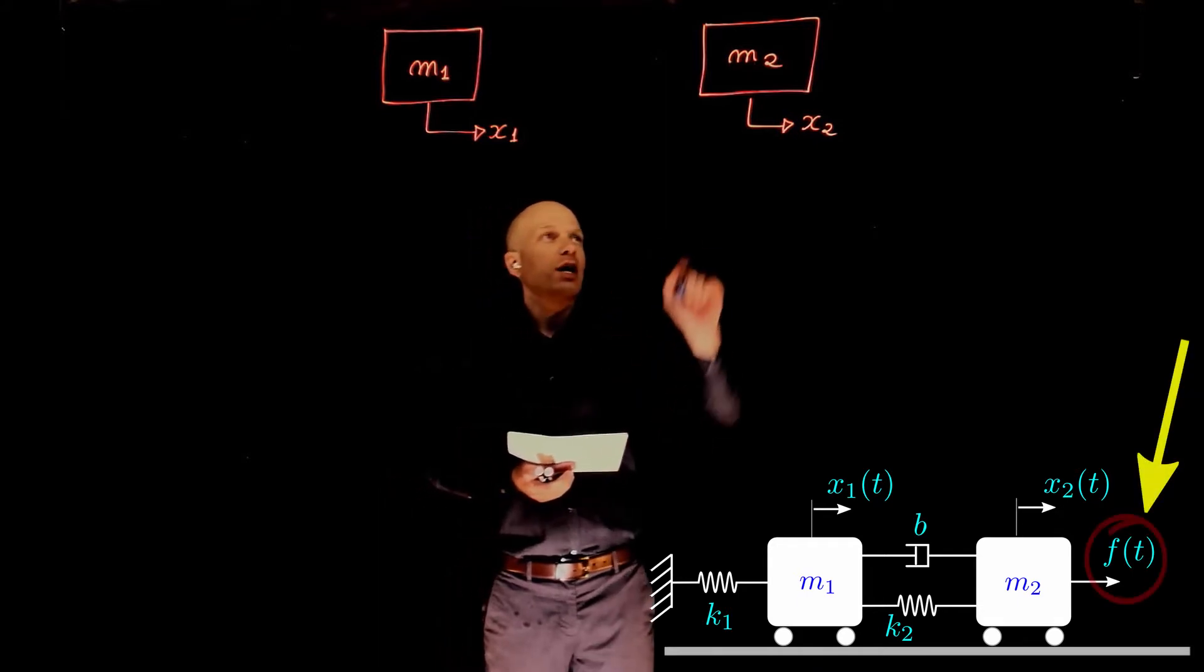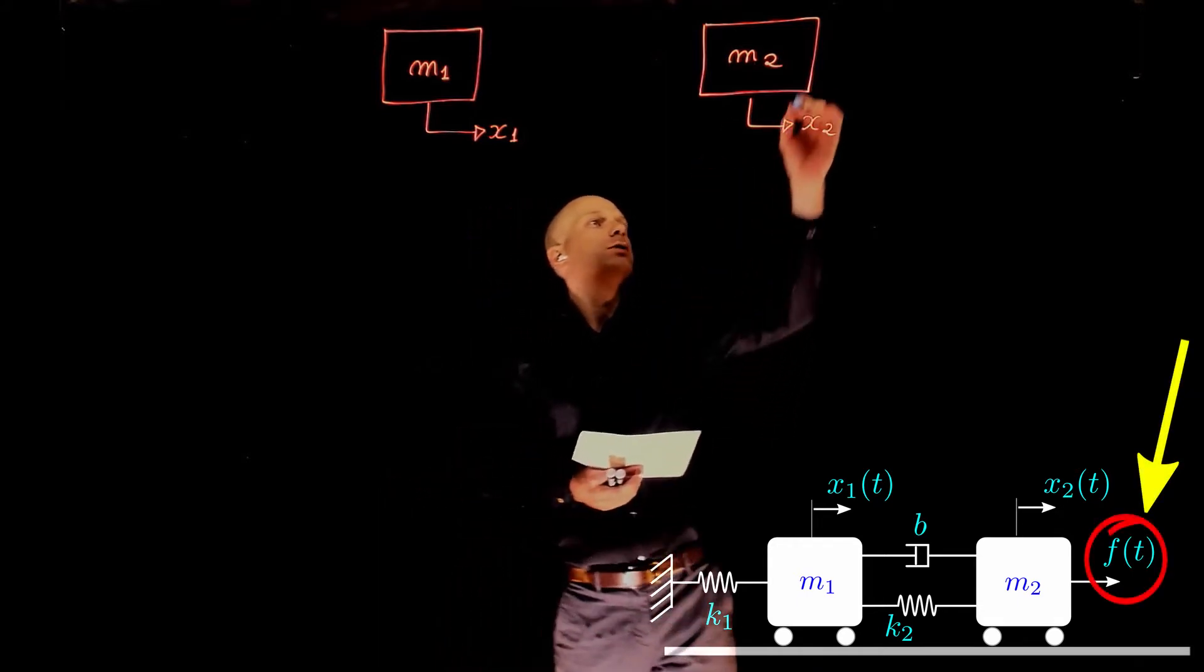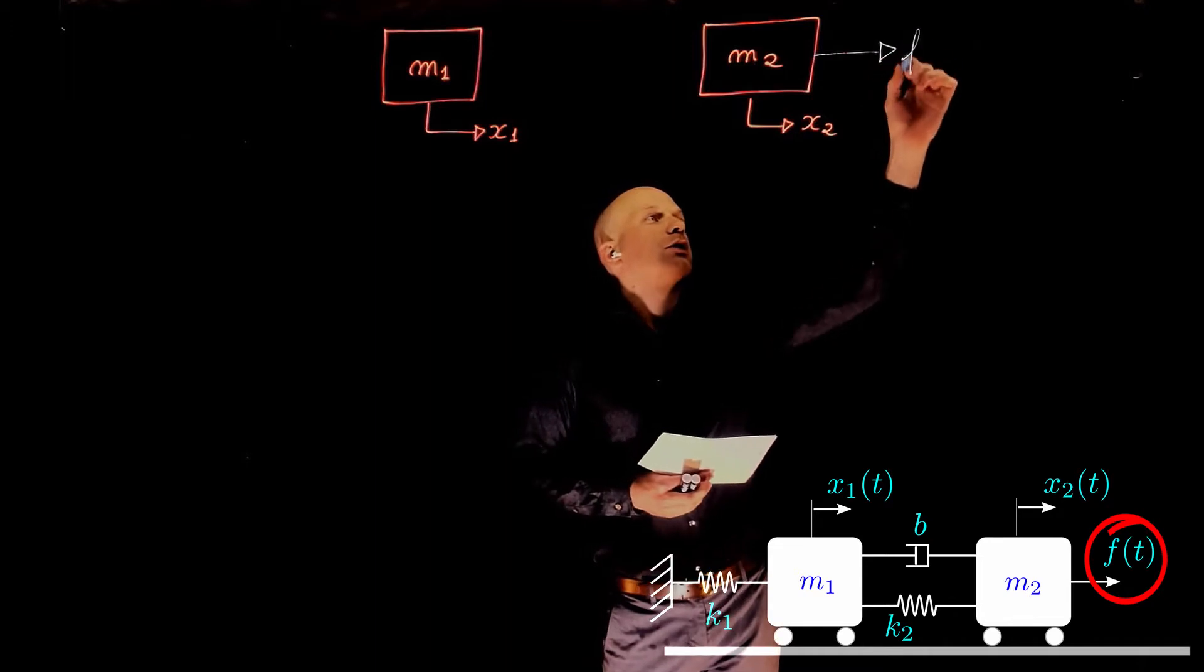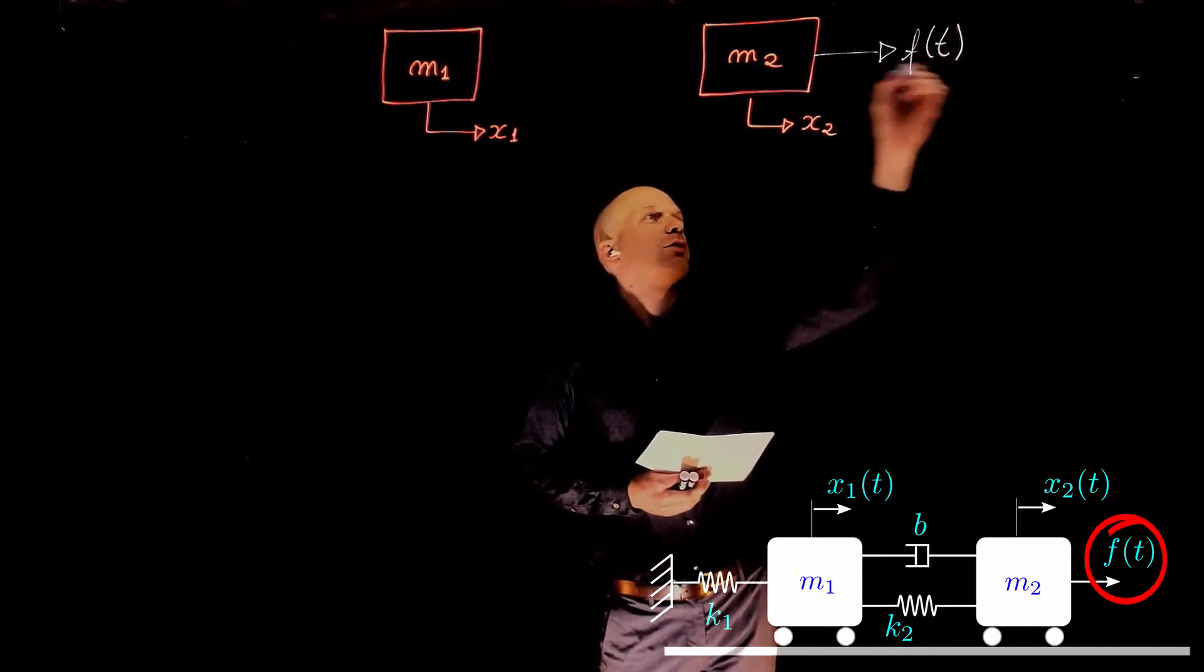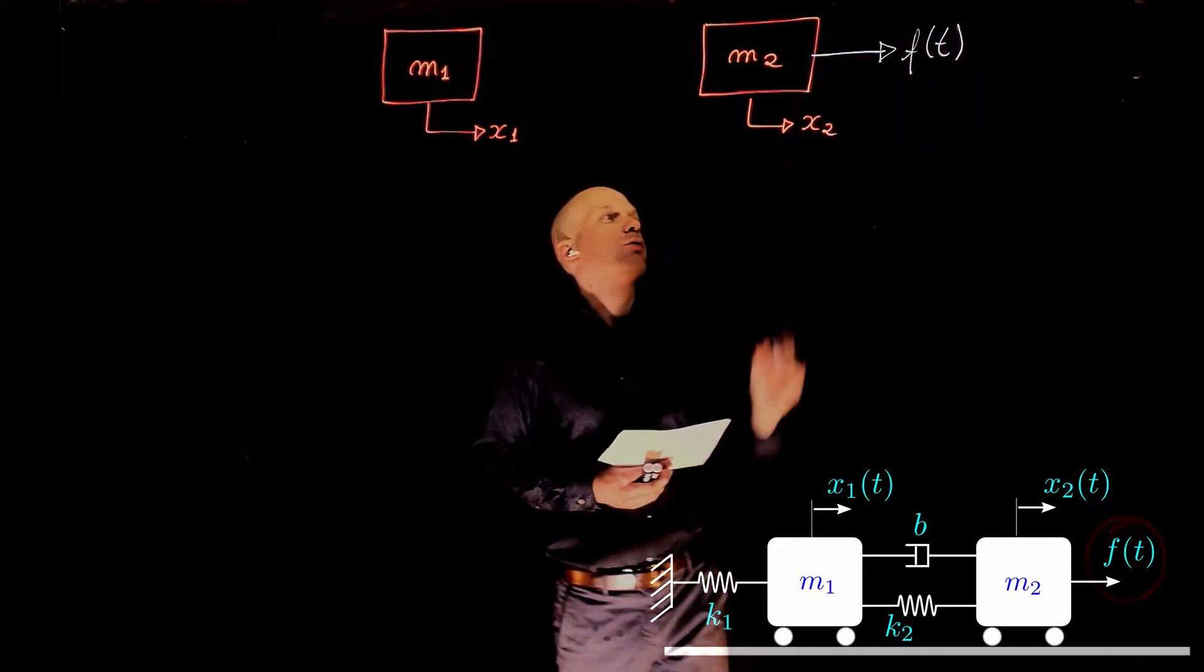The external force F is applied to M1. We can draw the external excitation force here as F on our free body diagram.